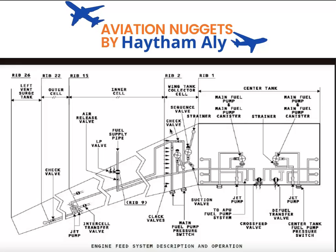We will see how the fuel is coming from the aircraft fuel tanks — center tank and wing tank — and supplying the engine. The gallery you see right now is the engine feed gallery. The engine feed gallery refers to the pipes or tubes that connect together the fuel booster pump and some components to supply fuel to the engine.